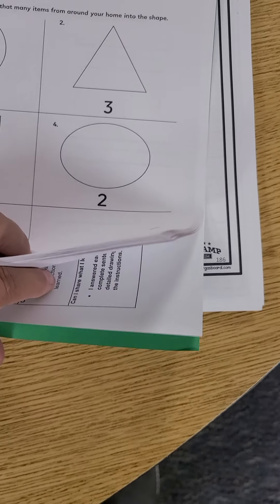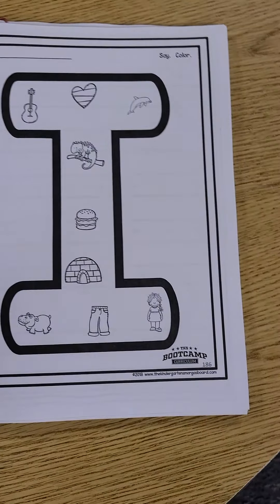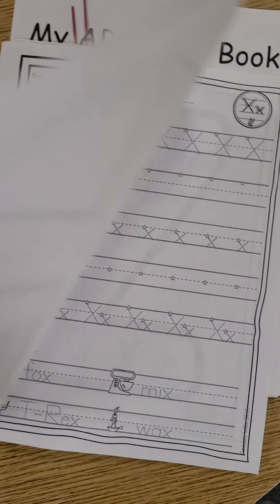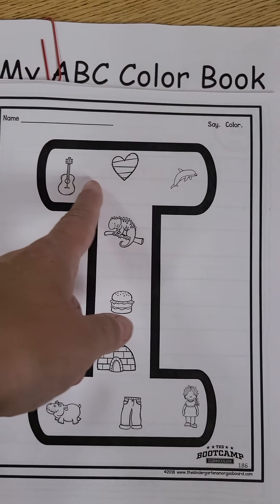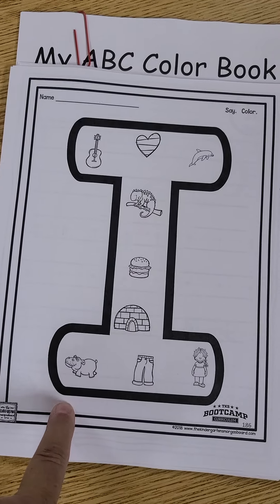And then when we get to our next dividing sheet, it's green, and this is for our handwriting. So again, you've got the letters and the handwriting. This time, friends, if you could color the items that start with that letter,